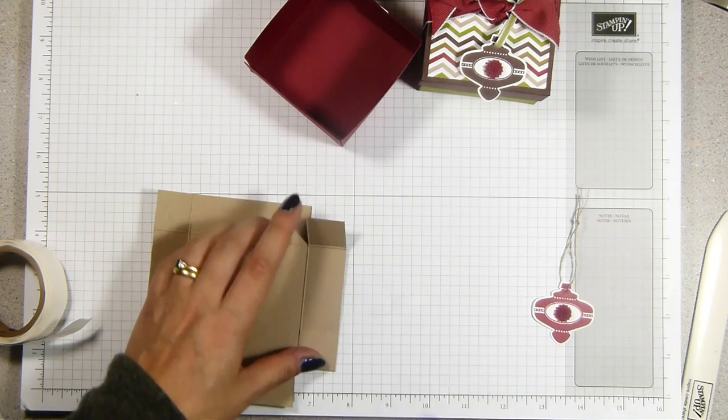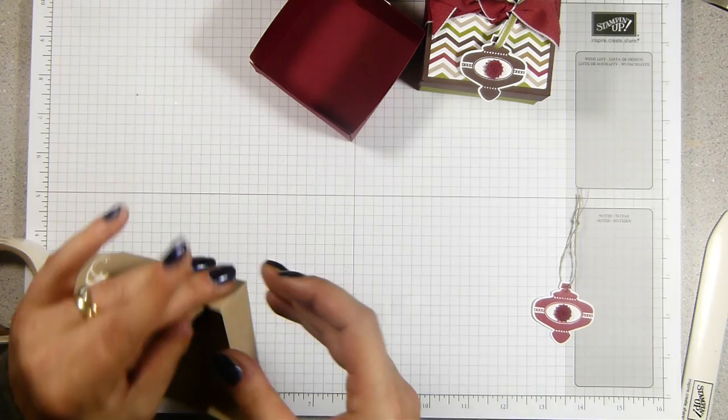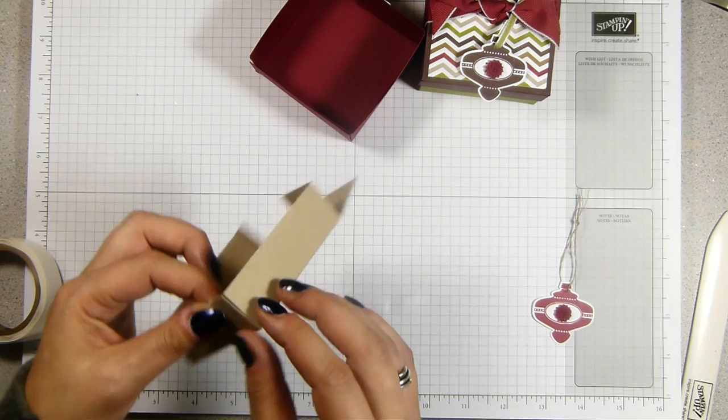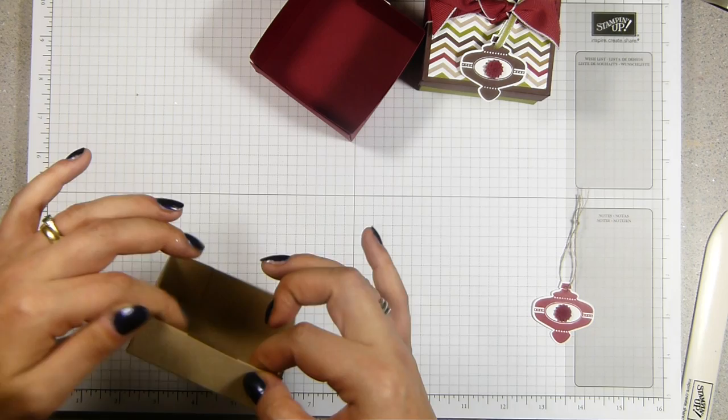Then the top, exactly the same. Again, try not to throw your glue everywhere. Just bring those round and hold the sides. Just hold them into place for a few seconds. I could have probably done this with Snail. I'm not that accurate. Sticky strip would be good as well, if you were more accurate than me.